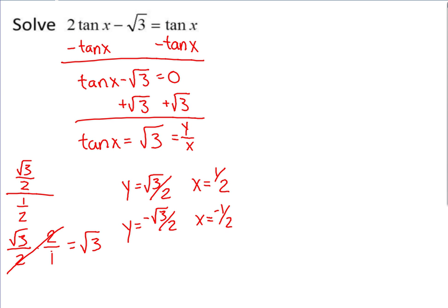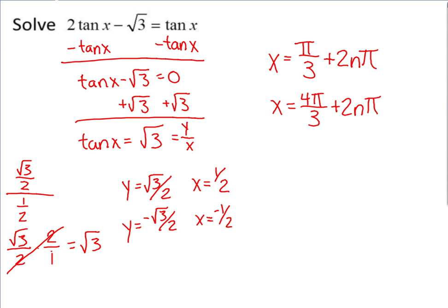On your unit circle, where do you have an x-coordinate of 1/2 and a y-coordinate of radical 3 over 2? That's at pi over 3. And we have an x-coordinate of negative 1/2 and a y-coordinate of negative radical 3 over 2 at 4π over 3. Since we're finding all solutions, the unit circle keeps repeating every full revolution of 2π. So we add 2nπ to represent all possible revolutions.